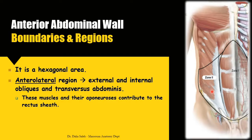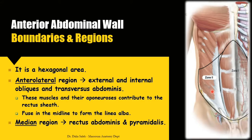The aponeuroses fuse in the midline to form the linea alba. The median region contains two vertically located muscles: the rectus abdominis and the small triangular pyramidalis muscle, which lies in front of the lower end of the rectus abdominis. The pyramidalis takes origin from the pubic bone and inserts at the linea alba to tense it.